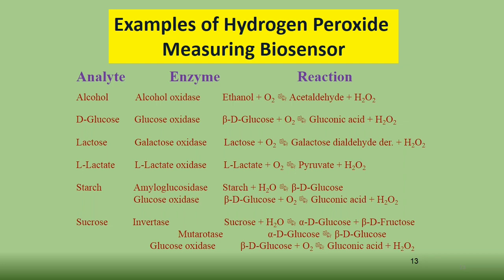Using a hydrogen peroxide biosensor, we can measure the alcohol level — for example, ethanol in spirits using alcohol oxidase as an enzyme. Ethanol reacts with oxygen in the presence of alcohol oxidase to give acetaldehyde and hydrogen peroxide. For each bioanalyte there are specific oxidase enzymes — for example, oxalate oxidase, glutamate oxidase. Using these, you can detect glutamate, an important neurotransmitter, and also sucrose, starch, and oxalate levels.